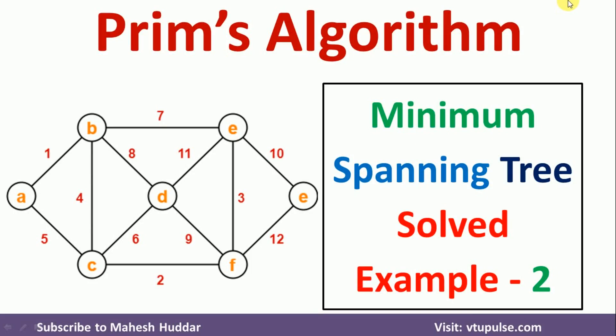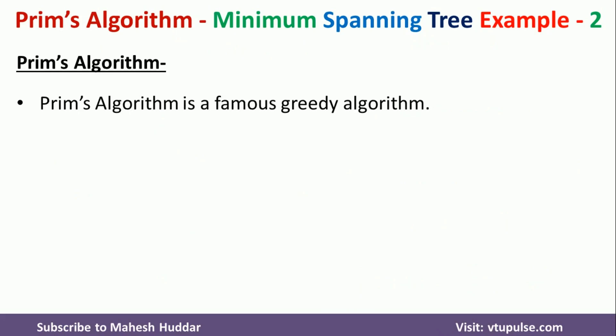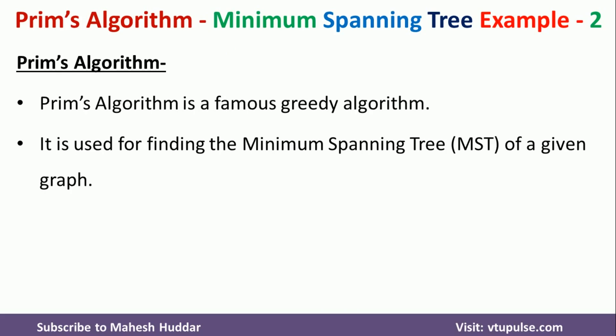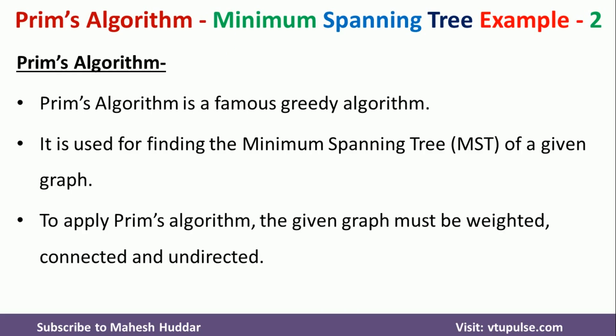Hi, welcome back. In this video, I will discuss how to apply Prim's algorithm to find the minimum spanning tree. This is solved example number 2. Link for other solved examples is given in the description below. Prim's algorithm is a famous greedy search algorithm. It is used to find the minimum spanning tree given a weighted, connected, and undirected graph.